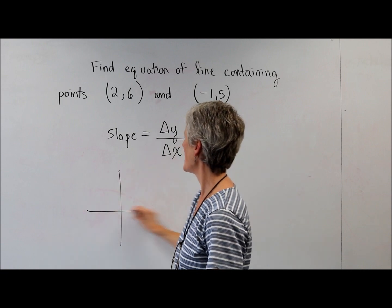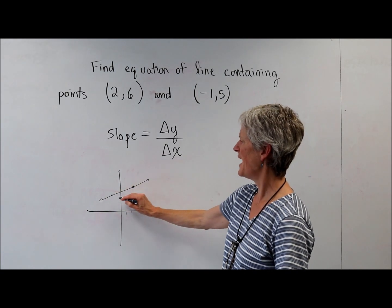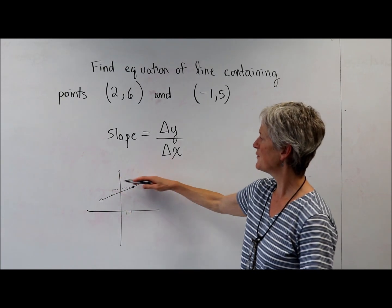And if I were just to kind of loosely graph these, 2, 6 is somewhere there, negative 1, 5 is somewhere there. I do that too. You know, it gives me sort of a rough idea. I should get some positive slope there. Not too steep, right? Absolutely. Right. So rise over run. Am I changing my y over a change in x?